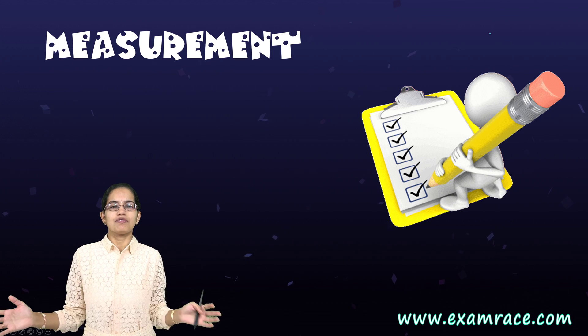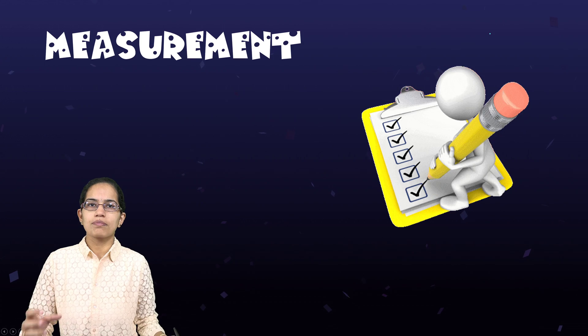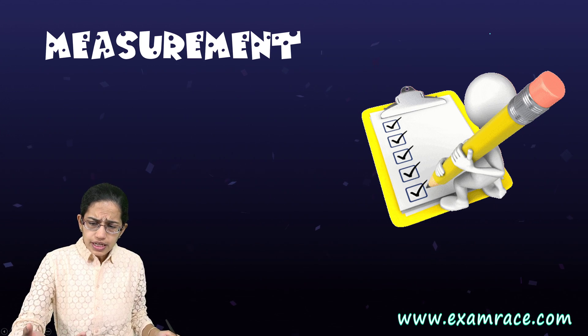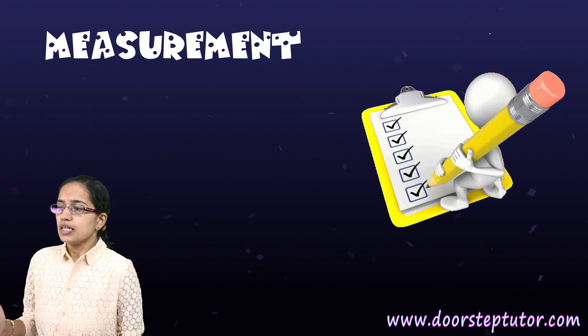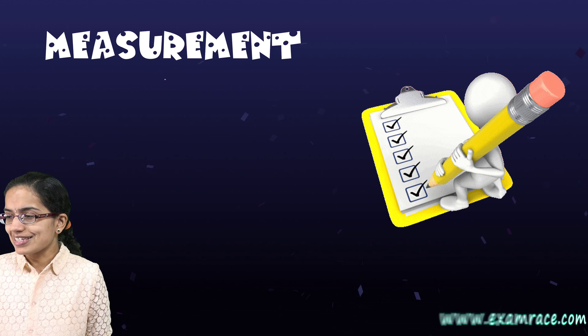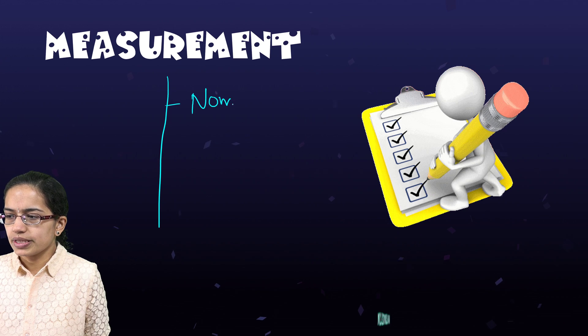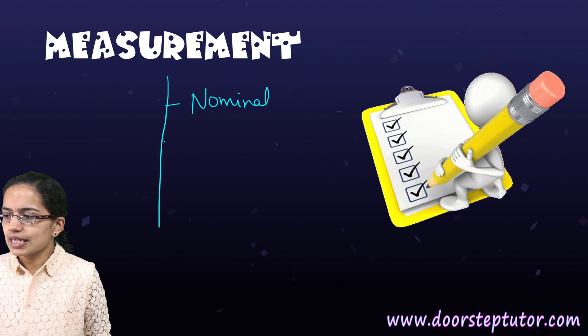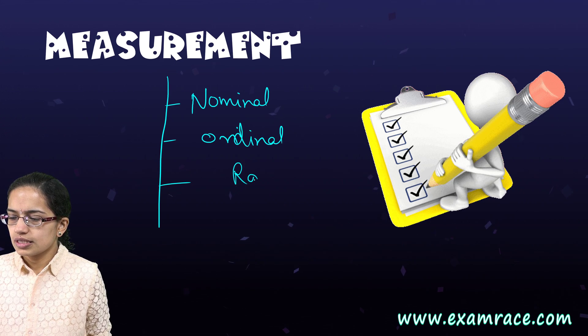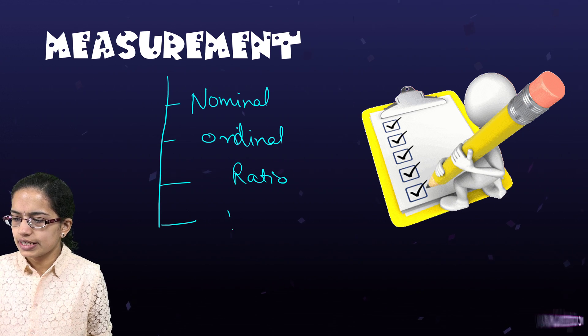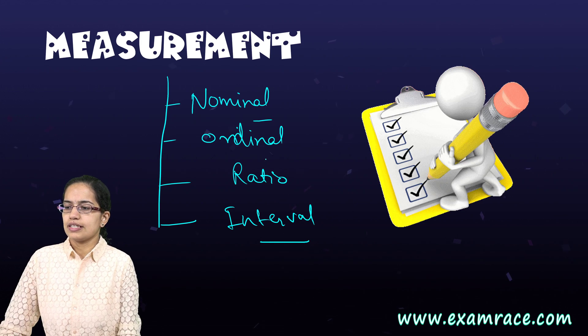Now measurement, as we already said, we are trying to quantify it, we are trying to represent the things in quantities or ideas or qualities. Now this measurement interestingly can be of four types. First is nominal, the second is ordinal, the third is interval, and the fourth is ratio. Let's take the interval first and the ratio.